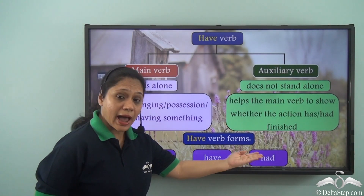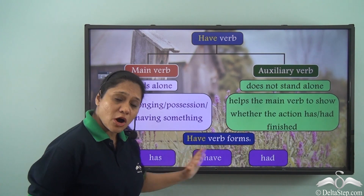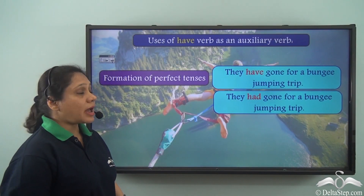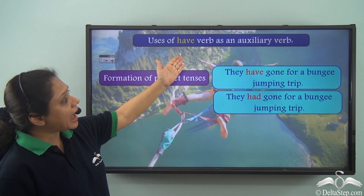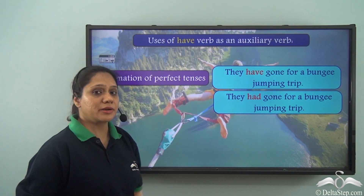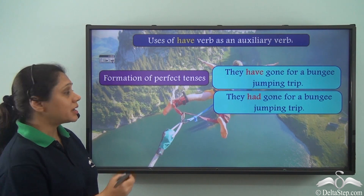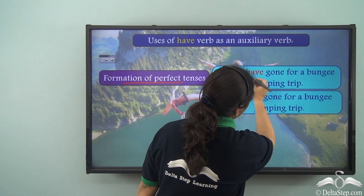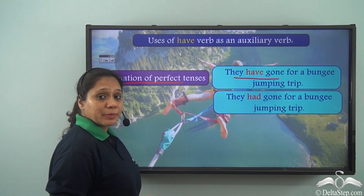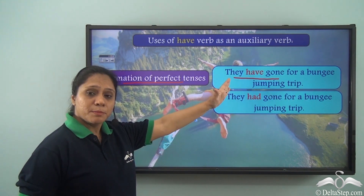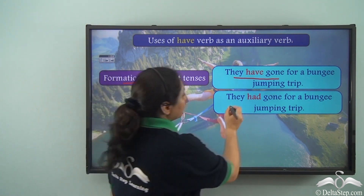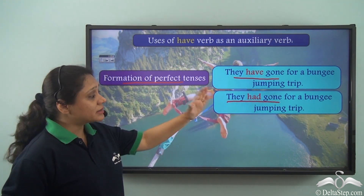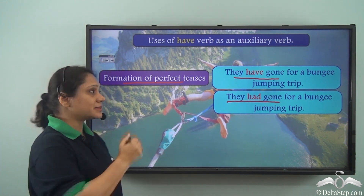Has, have, and had are the three forms of the 'have' verb. Now let us look at the various uses of the 'have' verb as an auxiliary verb. We use it in the formation of perfect tenses. For example, 'They have gone for a bungee jumping trip' — this is in the present perfect tense. 'They had gone for a bungee jumping trip' — this sentence is in the past perfect tense.